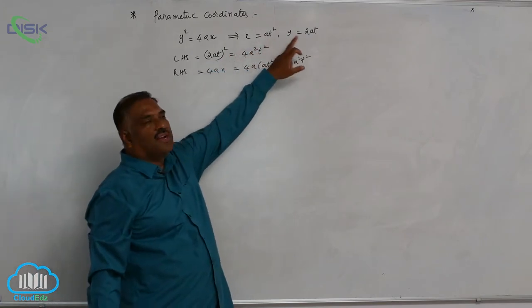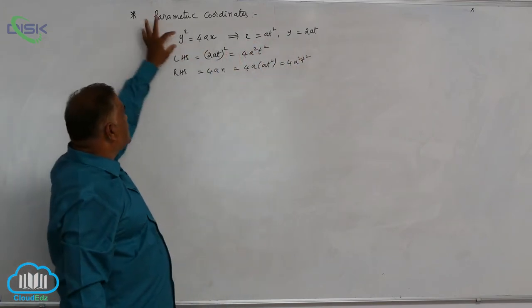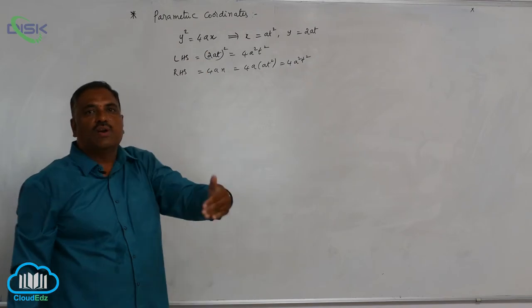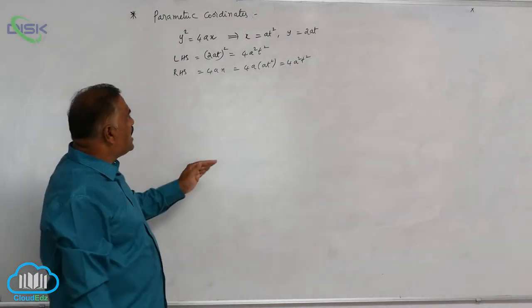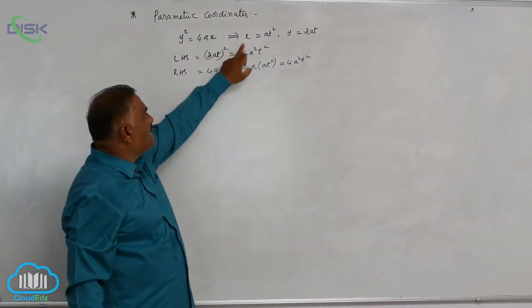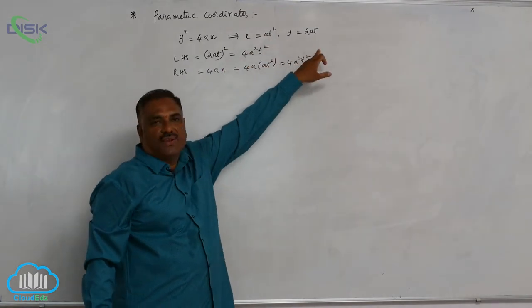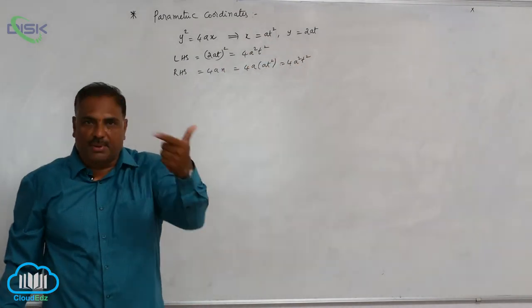This point at square comma 2at is satisfying the equation y square equal to 4ax. Here we have to observe x is in terms of t, y is in terms of t, that means t is a parameter.